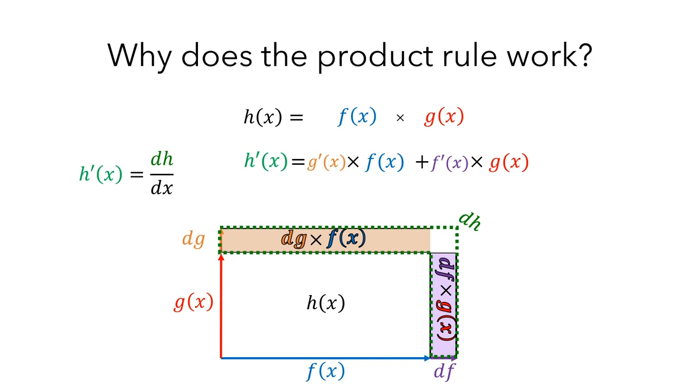So this is where the product rule comes from and why you'll need to use it, because f and g interact with each other when finding the rate of change of their product.